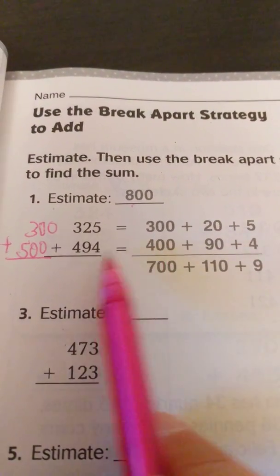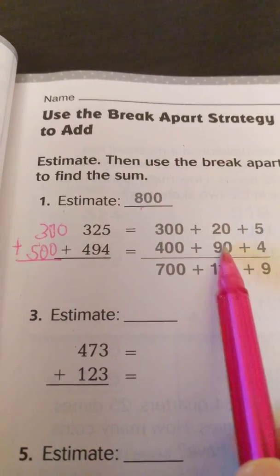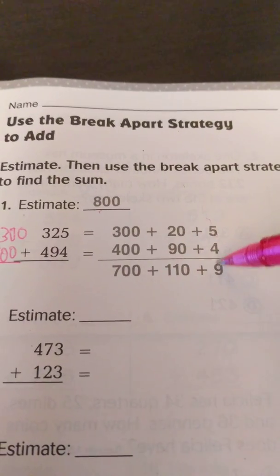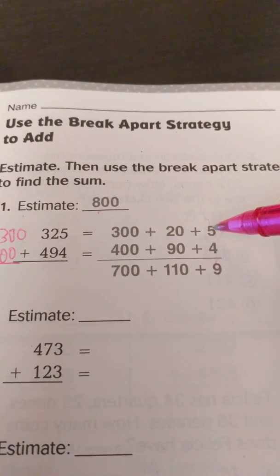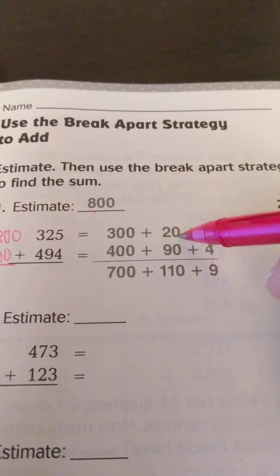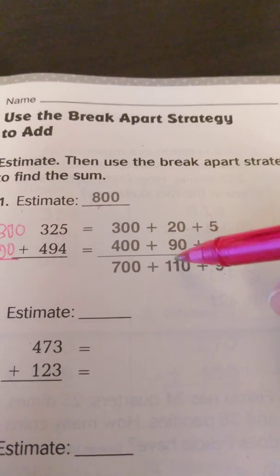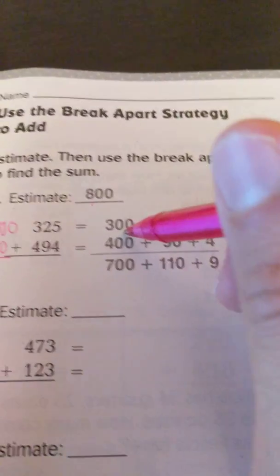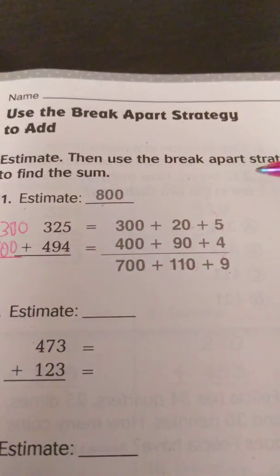4 hundreds, 9 tens, or 90, and 4 ones. Then they went ahead and added these vertically. And so 5 plus 4 is 9. 0 plus 0 is 0. 2 plus 9 is 11. So we got 110 for the middle number. And then we have 300 plus 400 equals 700.